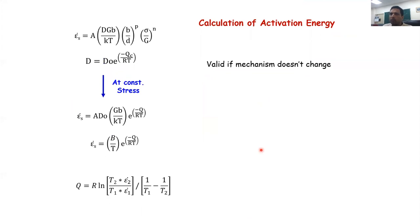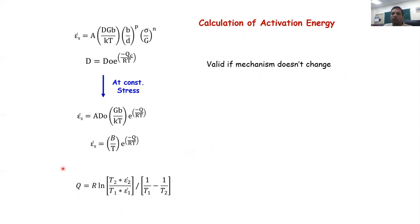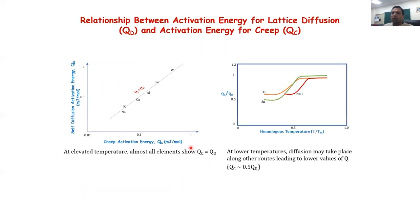For quantification: at constant stress, the strain rate becomes B/T · e^(−Q/RT), where temperature is the variable. If you have strain rate values at two different temperatures T1 and T2, you can calculate the activation energy Q for the creep phenomenon. Keep in mind that the mechanism must not change between the two temperatures; if it does, separate Q values must be calculated for each region.